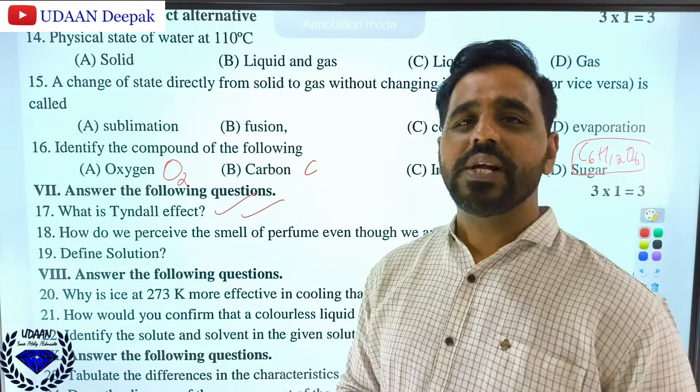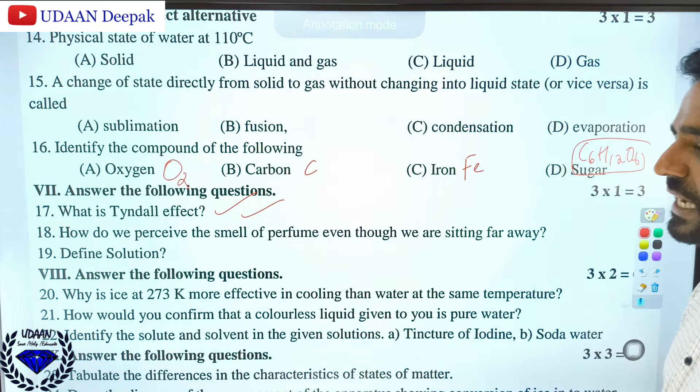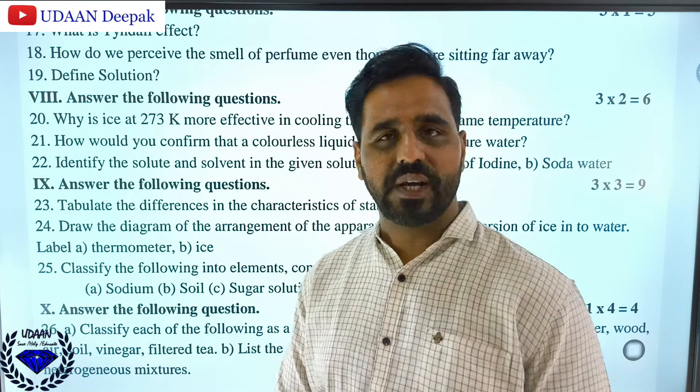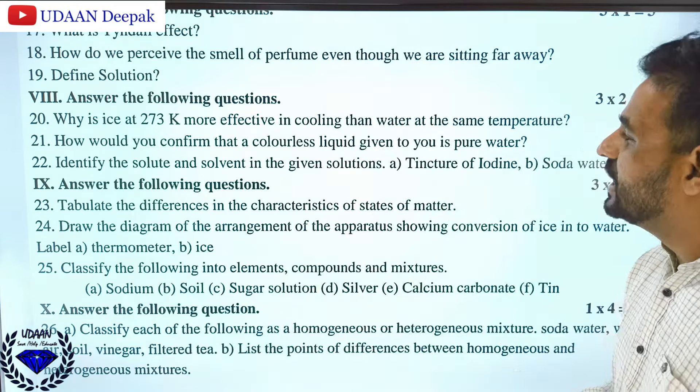Why is ice at 273 Kelvin (0°C) more effective in cooling than water at the same temperature? You should recall this answer directly from the textbook. How do you confirm that a colorless liquid is pure water? By finding the boiling point and melting point - boiling point should be 100°C and melting point 0°C. Identify solute and solvent: in tincture of iodine, iodine is the solute and ethyl alcohol is the solvent. In soda water, carbon dioxide is the solute and water is the universal solvent.